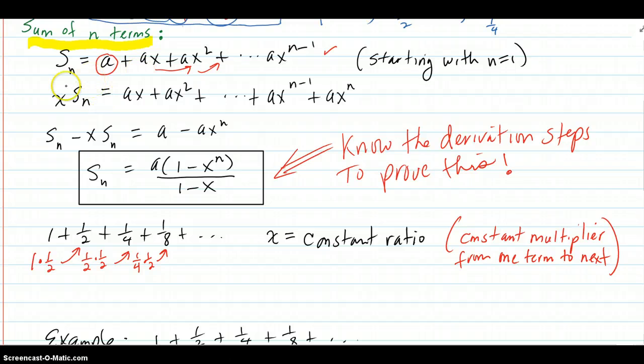If you use this trick of multiplying through every term of the sequence by x, then it multiplies the a by x, and you get ax, plus ax squared, plus ax to the third, plus the one before this, ax to the n minus one, and then this last one gets hit by the x and becomes ax to the n.